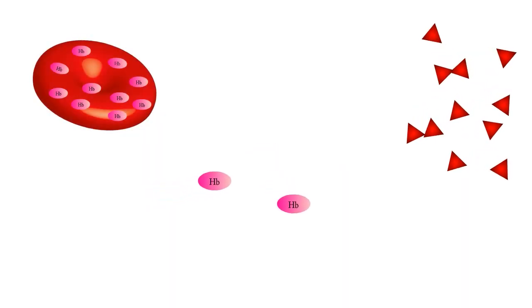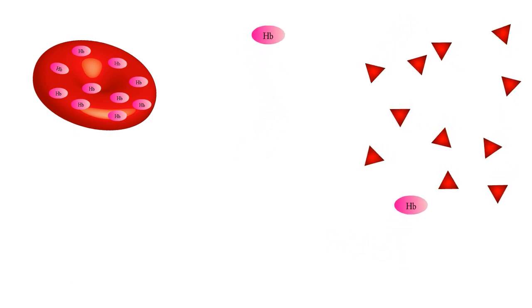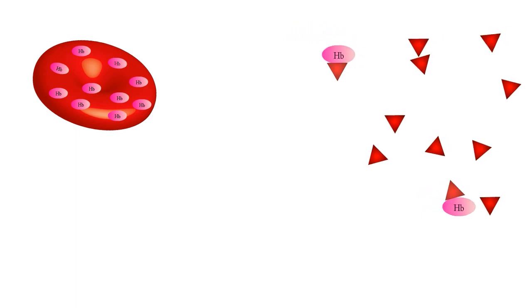Hemoglobin is normally found within red blood cells, and very little is found free circulating in the blood. Haptoglobin binds to free hemoglobin in the blood, forming a haptoglobin-hemoglobin complex that is rapidly cleared out of circulation.